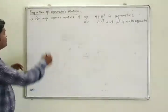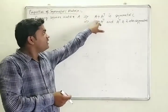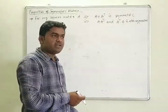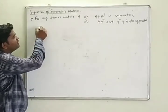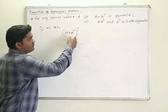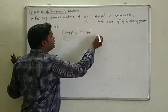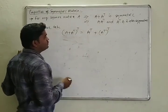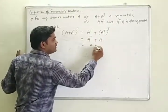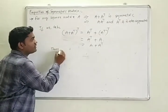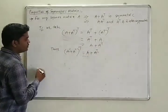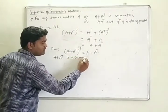Some properties of a symmetric matrix: For any square matrix A, the matrix A plus A^T is symmetric. Let's verify: the transpose of (A + A^T) equals A^T plus (A^T)^T, which equals A^T plus A, and by commutativity of matrix addition this equals A plus A^T. Therefore the transpose of (A + A^T) equals (A + A^T), so A + A^T is a symmetric matrix.